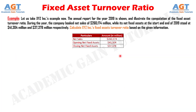Let us take another example of company XYZ. This shows the annual report for the year 2019 and illustrates the computation of the fixed asset turnover ratio. During the year, the company booked net sales of $260,174 million, while its net fixed assets at the start and end of 2019 stood at $41,304 million and $37,378 million respectively. Calculate the fixed assets turnover ratio of company XYZ based on the given information.